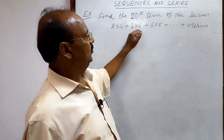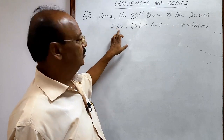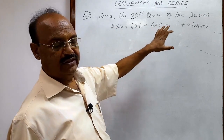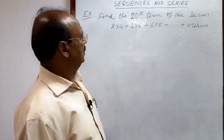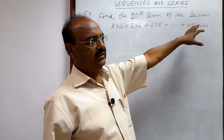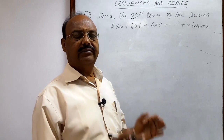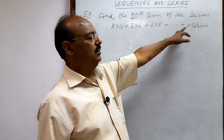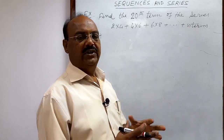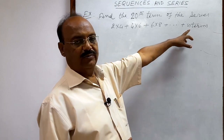In each term we find two factors. In the first term, the two factors are 2 and 4; in the second term, the two factors are 4 and 6, and so on. So in the nth term also there will be a product of a first factor and a second factor. The product of these two factors will be the nth term of the series.